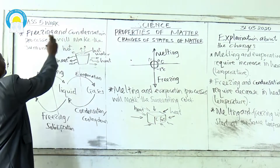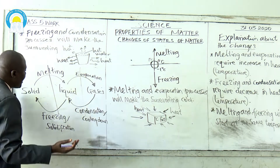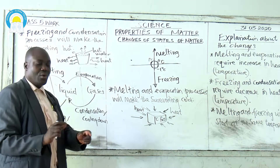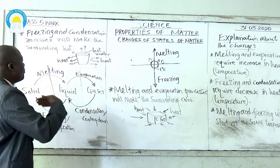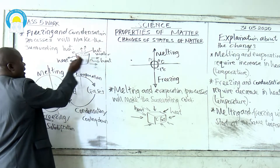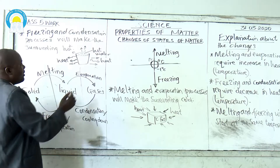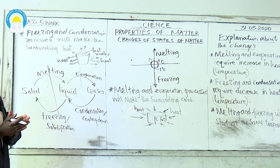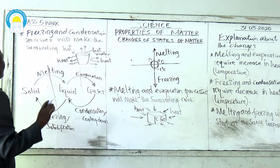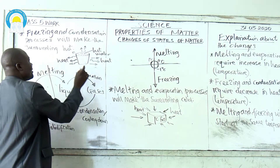Freezing and condensation processes will make the surrounding hot. For example, take a glass of hot water and place it on a desk or table. When you move your hand closer, you will feel some warmth — heat is coming from this water, radiating outward. The liquid will remain cold, but the heat from the liquid will move to the surrounding environment. That's why we say freezing and condensation processes will make the surrounding hot.